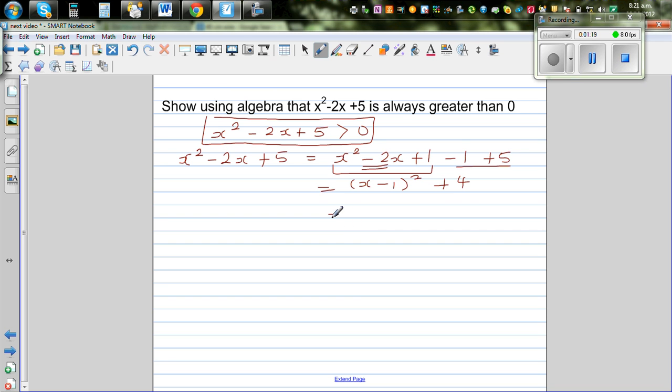So this is equal to. Now this is where you have to simply use your logic. Okay, so here it says x squared minus 2x plus 5 is equal to x minus 1 the whole squared plus 4.